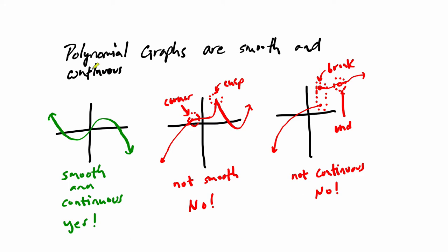When we say continuous, we mean there are no spots where it's undefined, no spots where it's broken. And smooth means there are no essentially sharp turns. You're going to see a sharp turn or a clear break, and if you see that, you know it's not a polynomial graph.